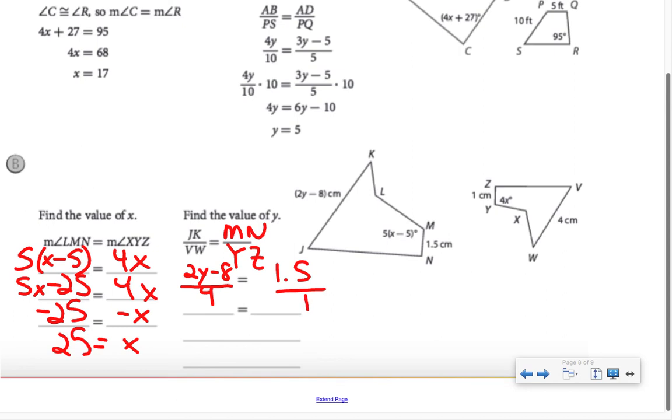The way some of you learned last year to solve a proportion was to cross-multiply. When I cross-multiply, I'm multiplying these two things across the diagonal. So 1 times 2Y minus 8 is 2Y minus 8, and that will equal 4 times 1.5, which is 6. Now I have a nice, neat equation to solve. I add 8 to both sides, I get 2Y equals 14, and therefore Y is 7 when I divide both sides by 2.